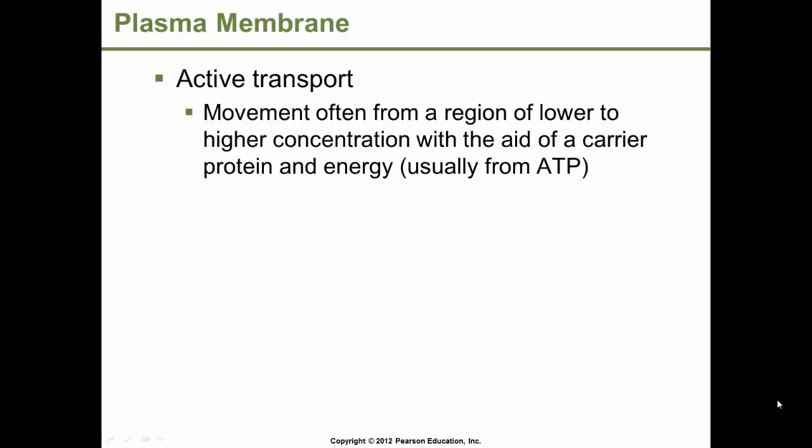We continue in Chapter 3, the cell, talking about mechanisms of transport across the plasma membrane. We'll now talk about active transport. This is often the movement from a region of lower concentration to a region of higher concentration. Active transport requires the aid of a carrier protein, but it's also going to require the use of energy, because it's going from an area of lower concentration to an area of higher concentration.